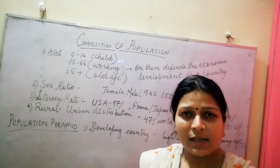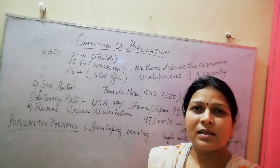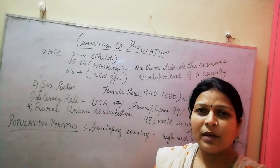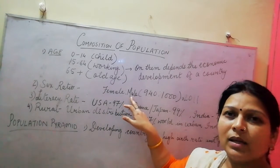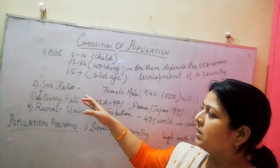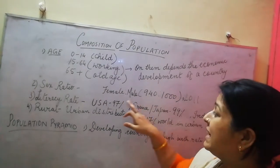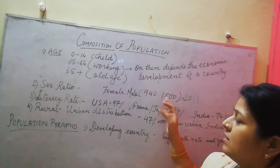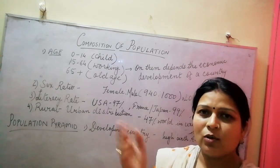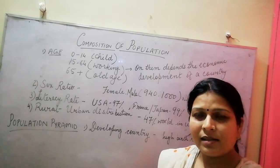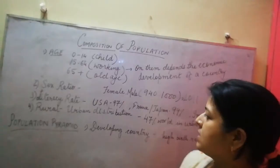Next is sex ratio — the ratio of males to females, specifically how many females there are in comparison to males. This is also an important composition of population. In India, it was 940 girls per 1000 boys. It has increased from 2001 to 2011 — first it was 936 girls per 1000 boys, now it is 940 girls per 1000 boys.